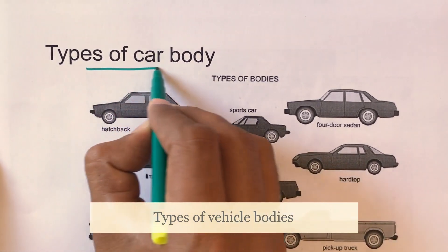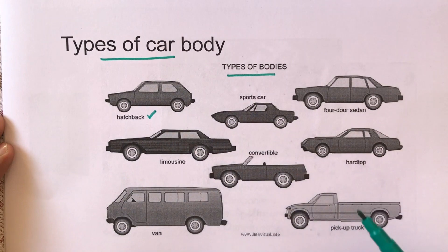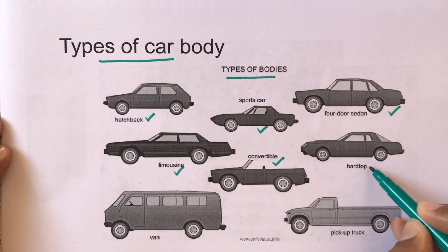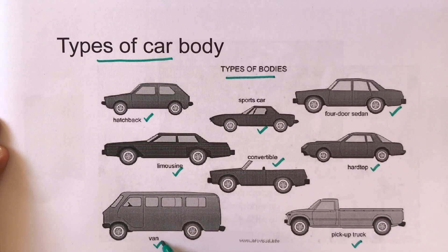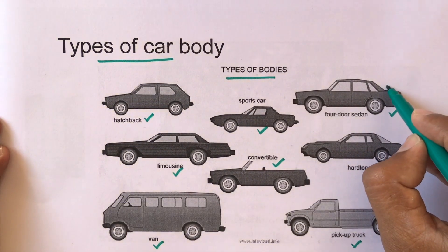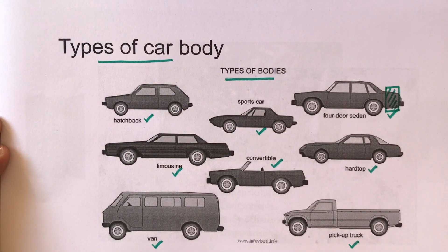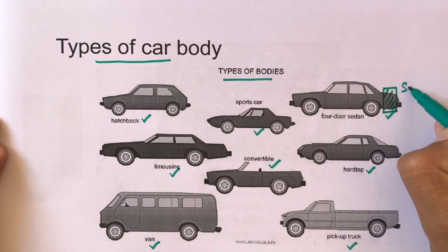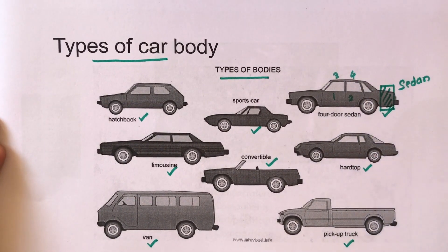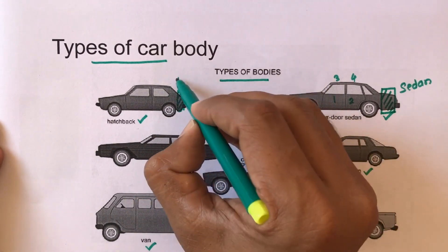Now let us look at various types of cars based on body type. These include the hatchback model, sports car, four-door sedan, limousine, convertible, hard top, pickup truck, and school van. The difference between a four-door sedan and a four-door hatchback is that in a sedan, behind the rear wheels there is a boot space — a dedicated space for storing your belongings. In a hatchback, there is no such large boot space behind the rear wheels, which is why it is called a hatchback.